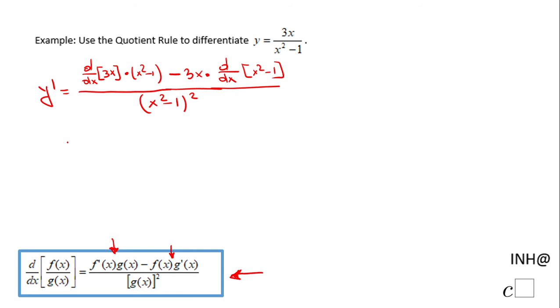So from here we're going to do some simplification. First, let's do the derivative. The derivative of 3x is 3 times the quantity x squared minus 1, minus 3x, and the derivative of x squared minus 1 is 2x.